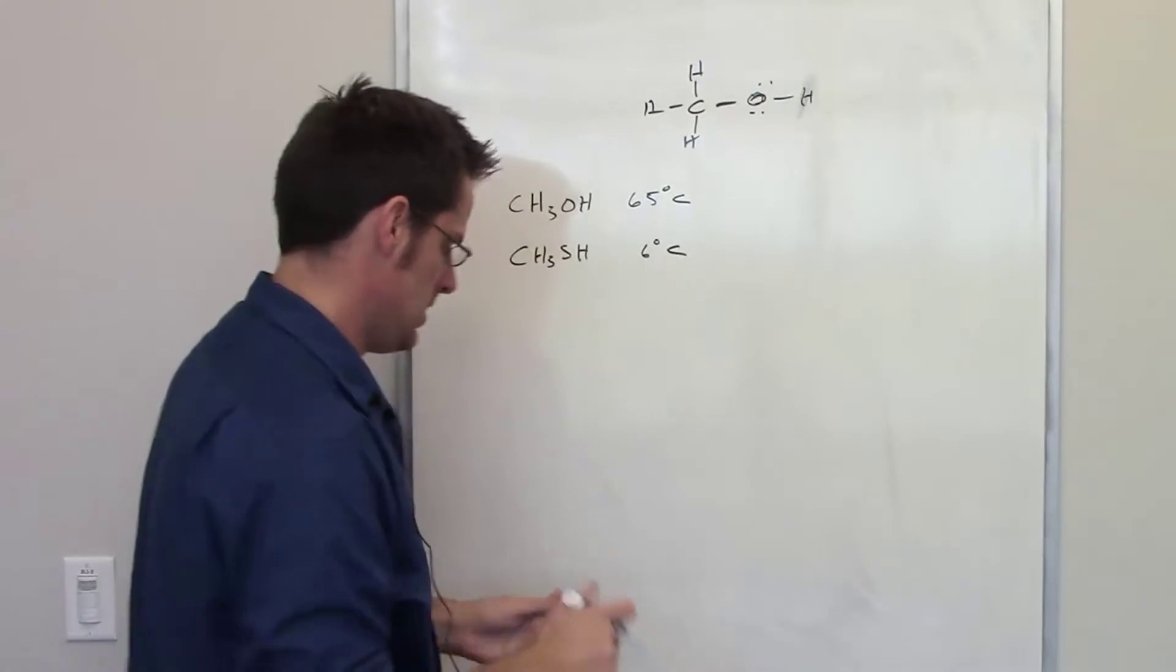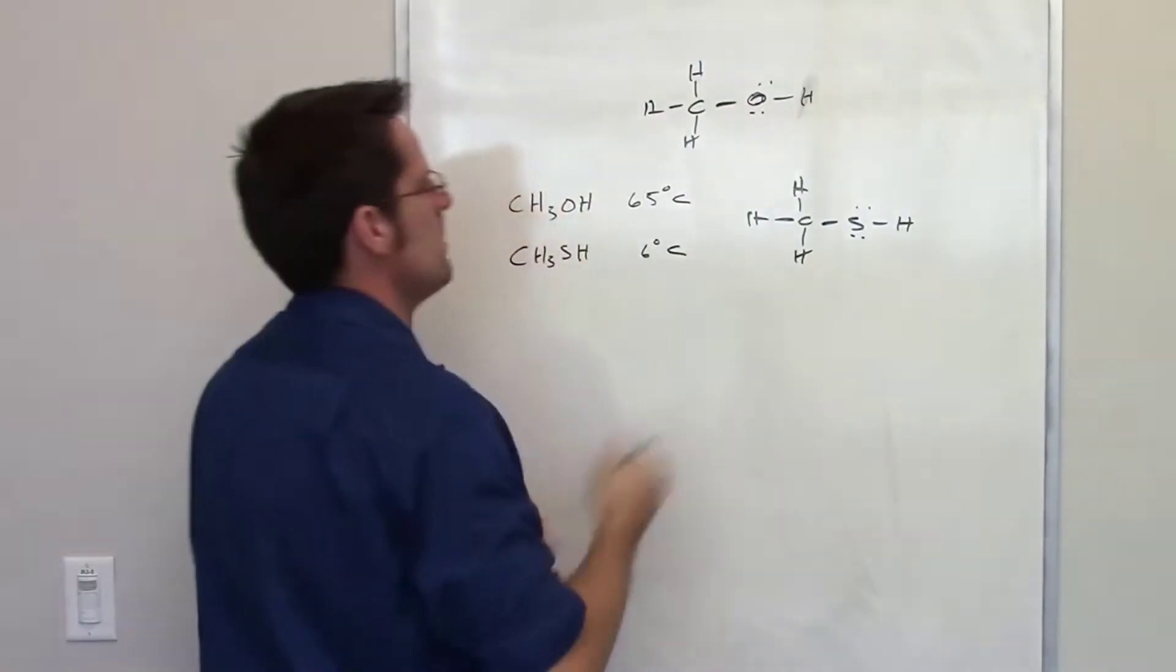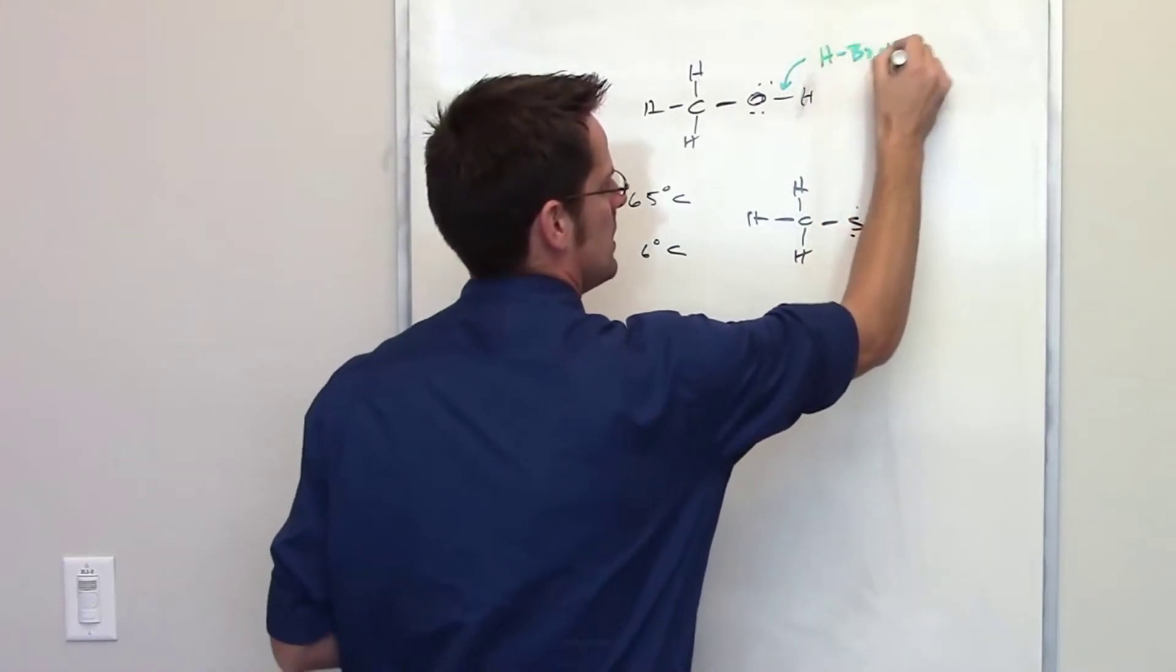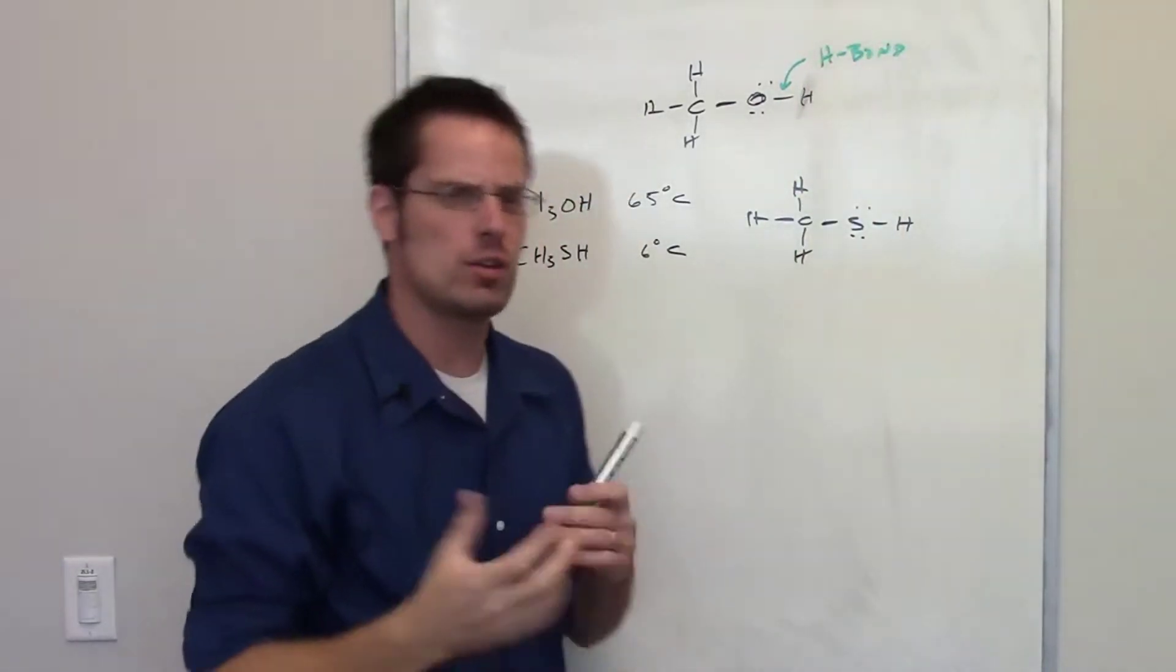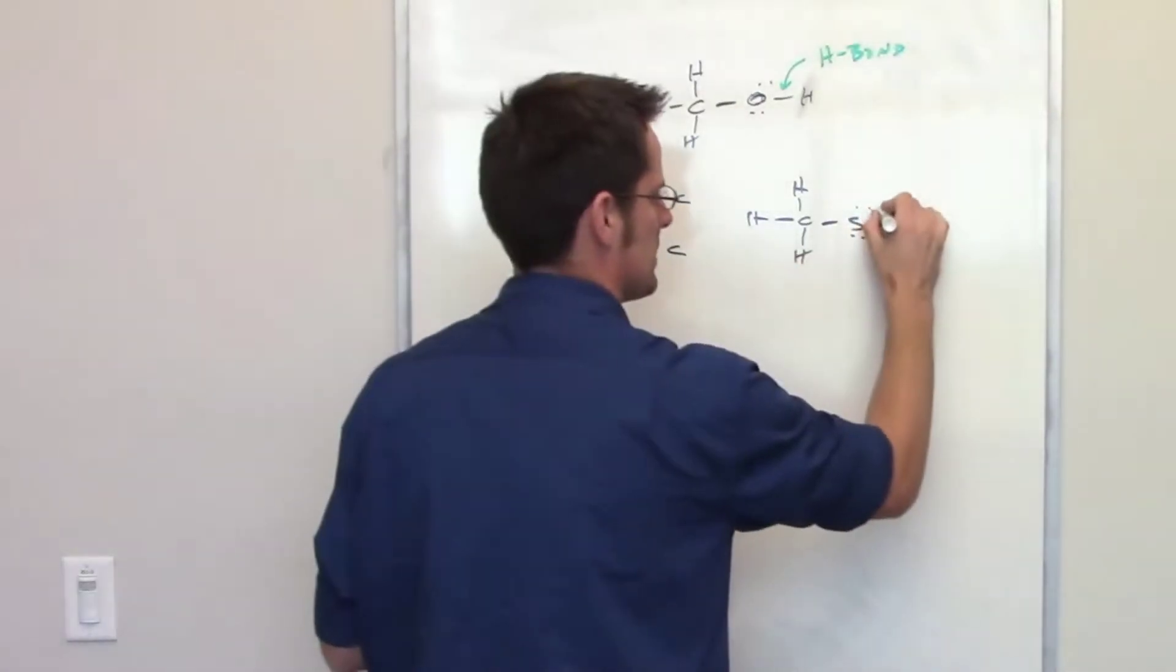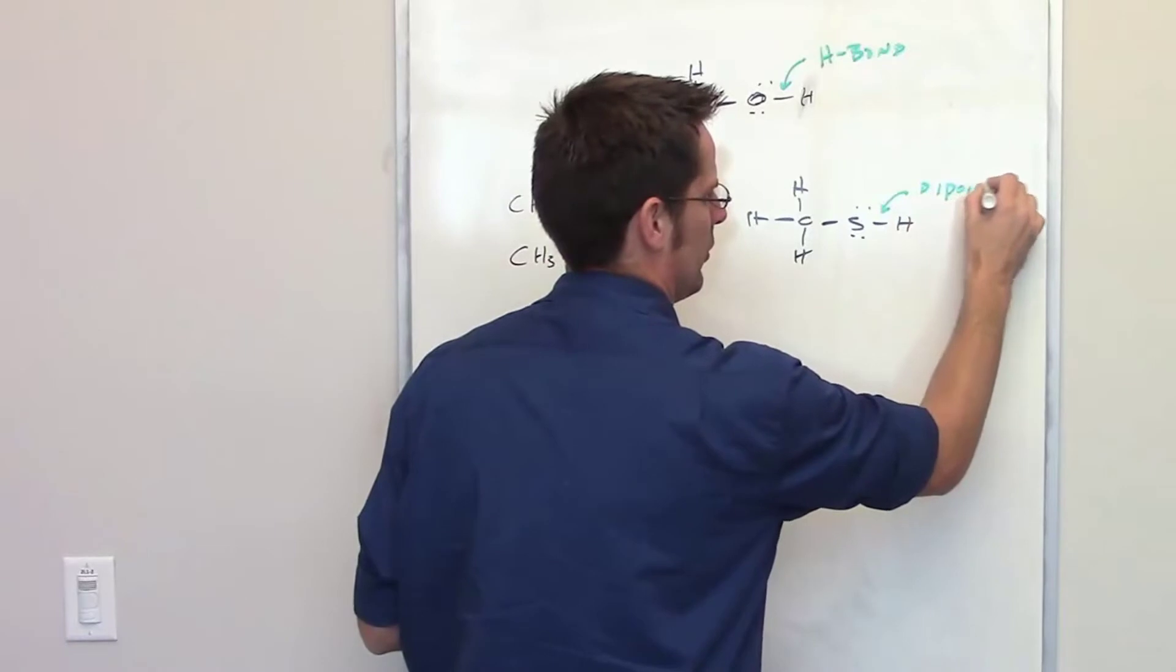You should also realize that methanol's oxygen-hydrogen bond is a hydrogen bond, because a hydrogen bond is of course a hydrogen bonded to either oxygen, nitrogen, or fluorine, whereas this is only a dipole-dipole.